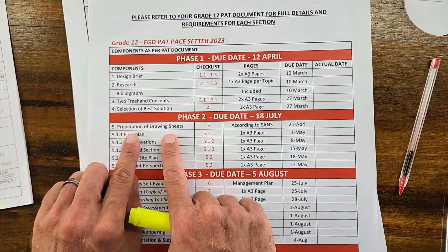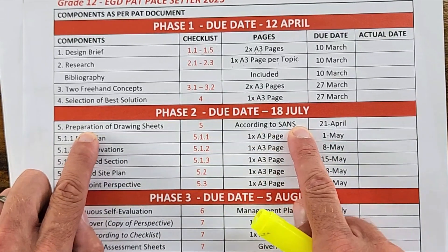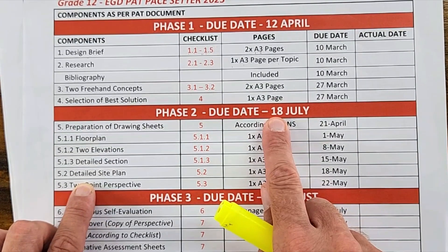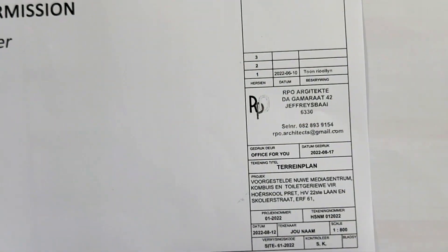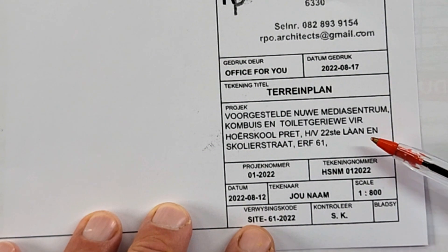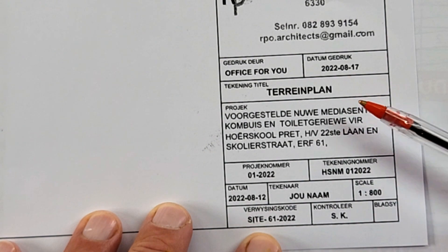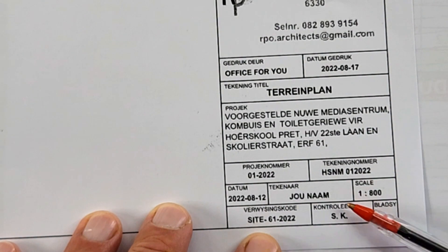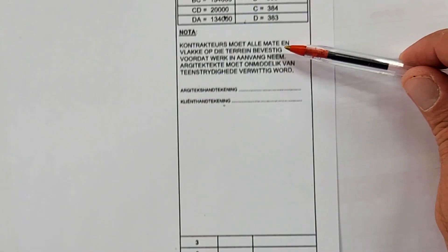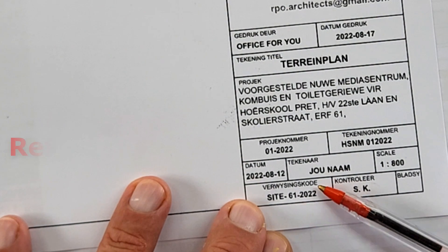Let's talk through the various components of a title panel. This is available as a download in the description, and there's also an English version available. You're going to start off by making sure all the details provided in this specific example are included in your own title panel.